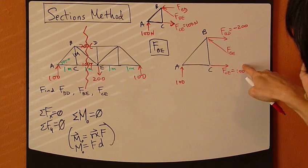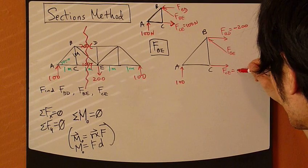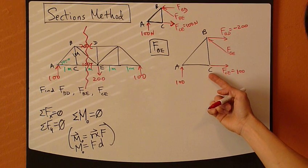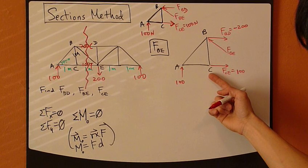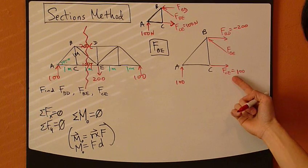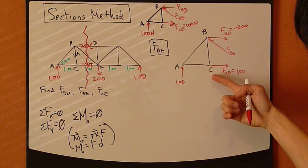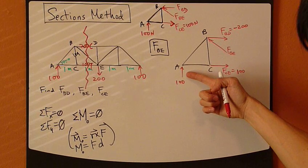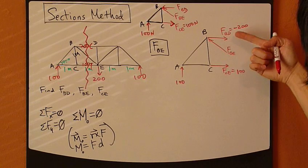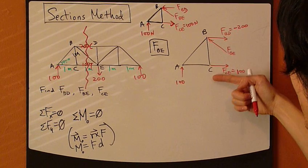Joint E would not work either because BE would disappear also. What about joint C? Taking the moment about joint C means CE will disappear since CE passes through joint C. This 100 will have a moment about joint C but that's easy to figure out. BD will also create a moment about joint C.